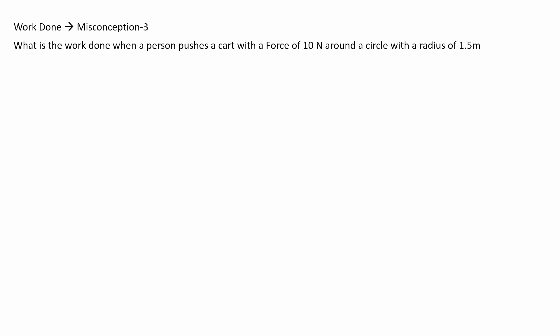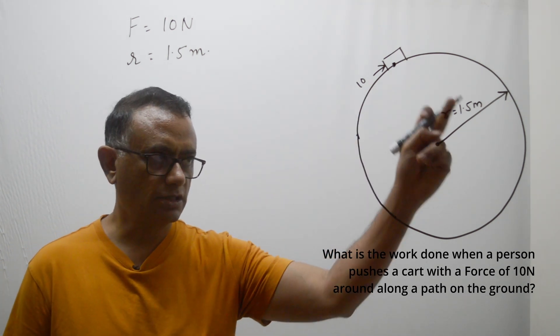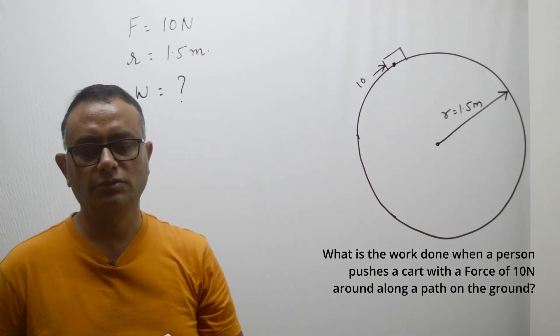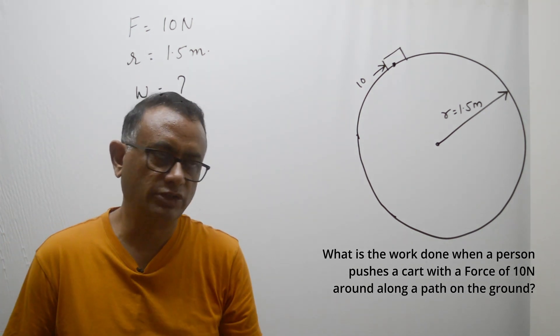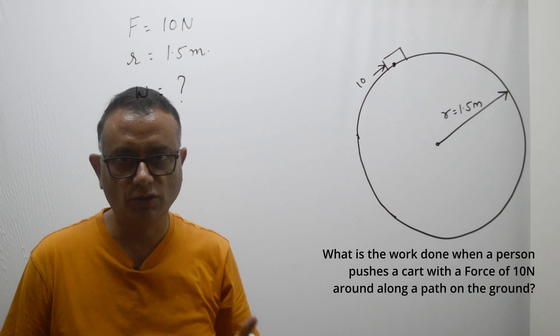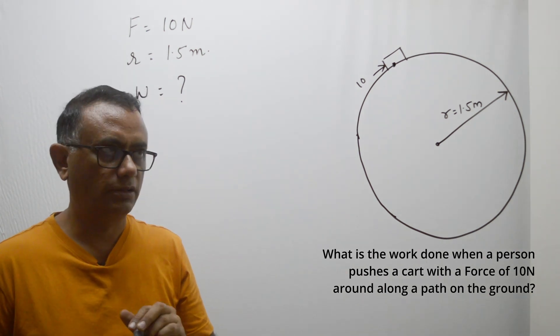The third numerical is about a person pushing a cart with a force of 10 newtons around a circle of radius 1.5 meters. We can visualize the problem this way. The person is pushing the cart around a circle of radius 1.5 meters and we are asked to calculate the work done. The common misconception again is with respect to displacement — if a person goes from one point and returns to the same point, displacement is zero, so work done is zero.